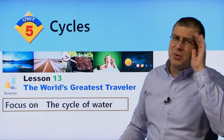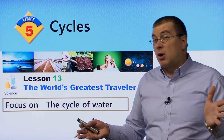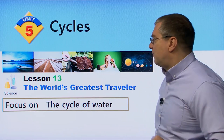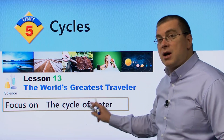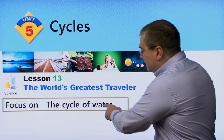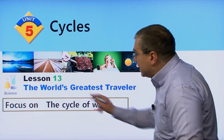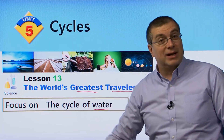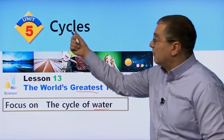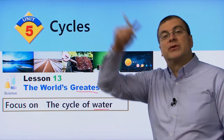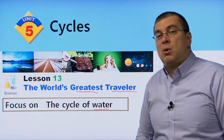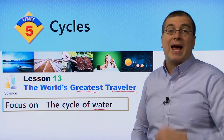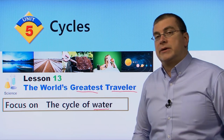You're probably thinking the world's greatest traveler is Marco Polo — no, it's not a person, it's a thing. We're going to focus on the cycle of water and see how water is the world's greatest traveler, because water really travels a lot and it travels in a cycle. We'll explore that idea in the reading passage, but first we need to learn some vocabulary.